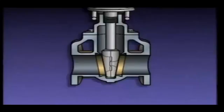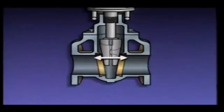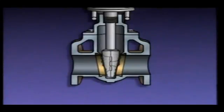Gate valves are normally used in on-off applications, but in an emergency they can be used to throttle flow. However, long-term use as a throttling valve can damage a gate valve. In many types of gate valves, when the disc is raised slightly, fluid flow through the valve creates turbulence, which causes the disc to swing from side to side, banging or chattering against the seat. This chattering will cause wear on the seat and disc, and eventually the valve will not shut off flow when it's completely closed.